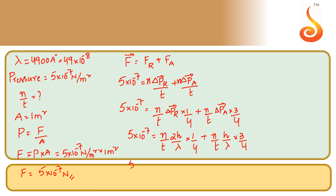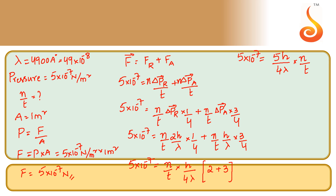Simplifying, we can take n/t × h/(4λ) as a common factor. Inside the bracket we get 2 + 3, which equals 5. So the expression simplifies to: 5 × 10⁻⁷ equals 5h/(4λ) × n/t. The 5s cancel, giving us n/t equals 4λ/(h) × 10⁻⁷.